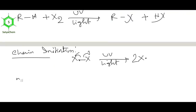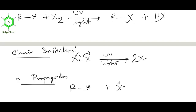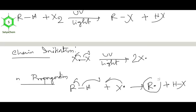Chain propagation: X dot reacts with the alkane RH, taking up the hydrogen atom (H dot) by homolytic fission. The X dot takes up this H dot from R-H, forming H-X and generating a carbon free radical R dot. This is the formation of a carbon free radical through chain propagation.